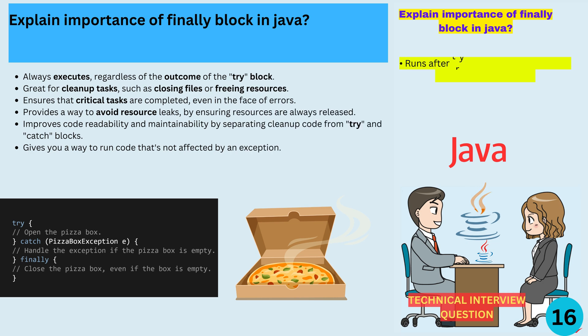For an example that even a kid could understand, imagine you're opening a pizza box with the following code. Try: open the pizza box. Catch PizzaBoxException e: handle the exception if the pizza box is empty. Finally: close the pizza box even if the box is empty. This example shows how the finally block ensures the pizza box is always closed, even if there's no pizza inside.